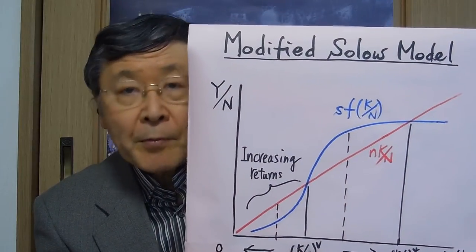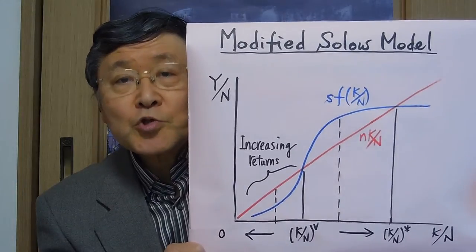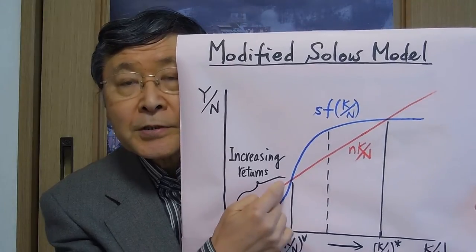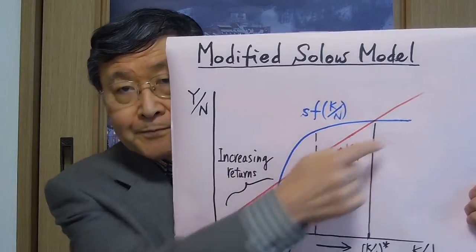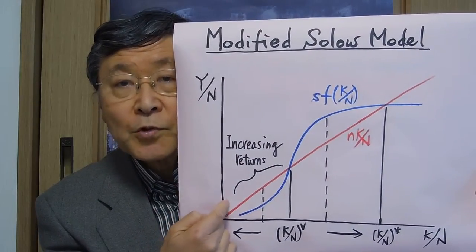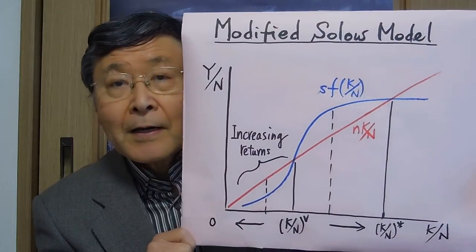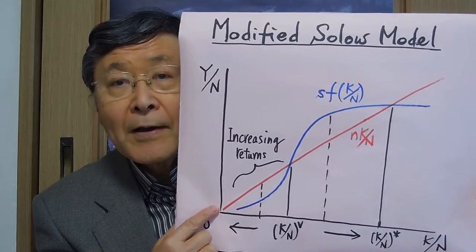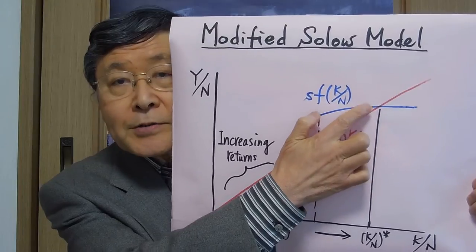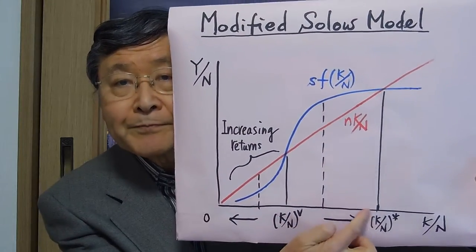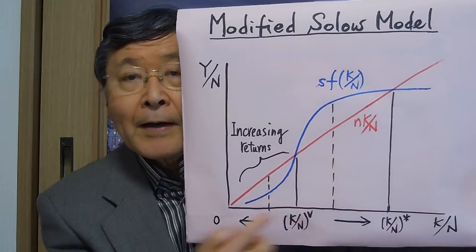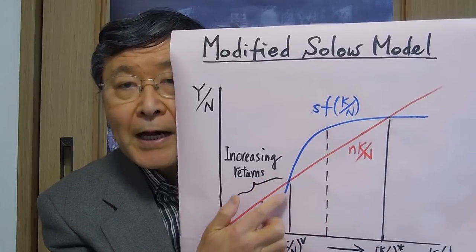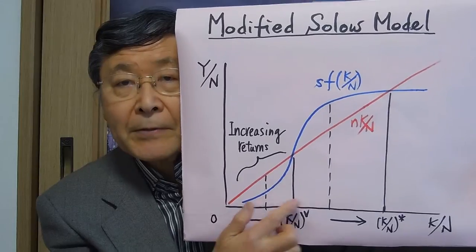But in the course of economic development, it is reasonable to assume that at least in the initial stage there will be increasing returns, and then decreasing returns will set in. So the production function will look like an S-shape. Here is the population growth line, as we saw before, and we see an intersection here that gives a steady-state growth equilibrium.